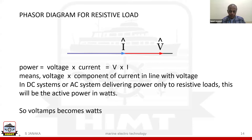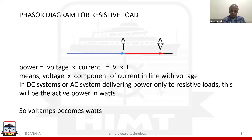In the AC system with a resistive load, we say current and voltage are in phase. The current vector and voltage vector are in phase or in line with each other. So the power measured in a resistive component is nothing but V into I — voltage into the component of current in line with the voltage — which gives watts. In a resistive load there is no power factor.